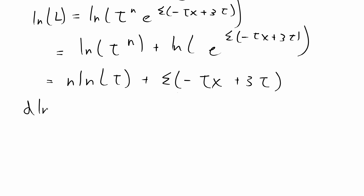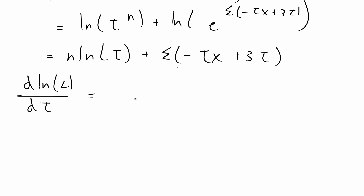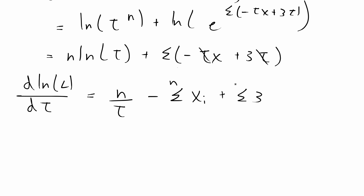Next I'm going to take the partial derivative of the log-likelihood with respect to tau. The derivative of n times ln(tau) is n over tau. Then taking the partial derivative of the sum term with respect to tau, the constant factors with respect to tau drop out, giving us negative the sum of x_i's plus the sum of 3's.